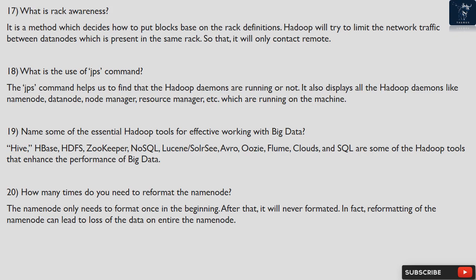Question 18: What is the use of the JPS command? The JPS command helps us find whether the Hadoop daemons are running or not. It also displays all the Hadoop daemons — like name node, data node, node manager, resource manager, etc. — which are running on the machine.